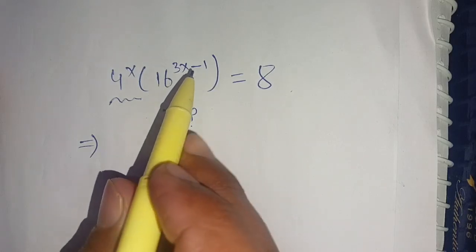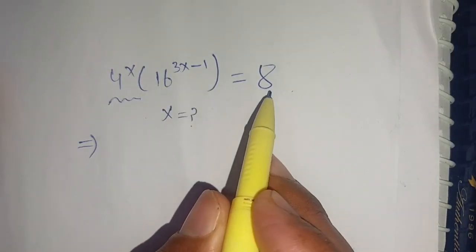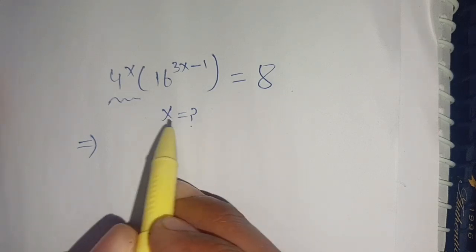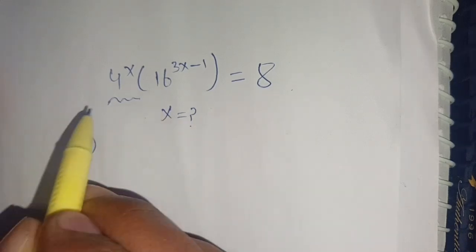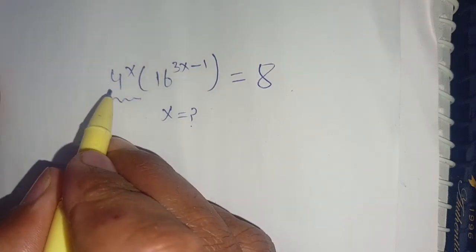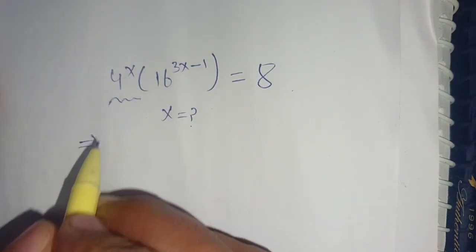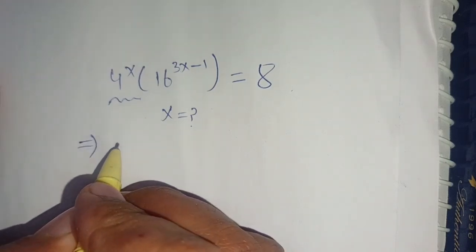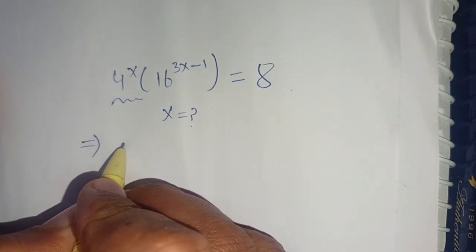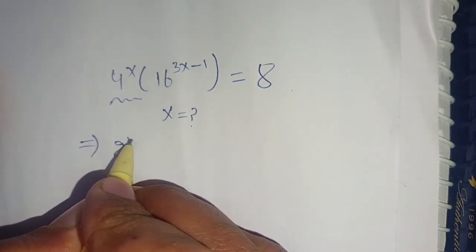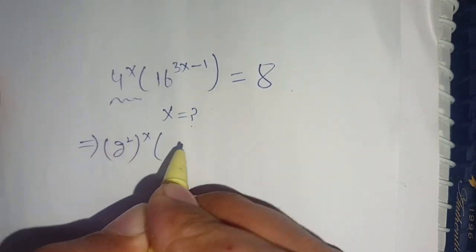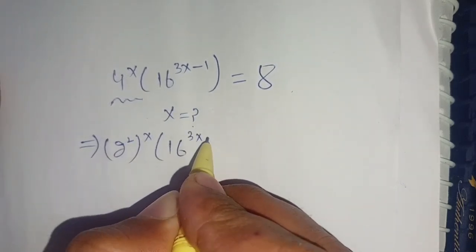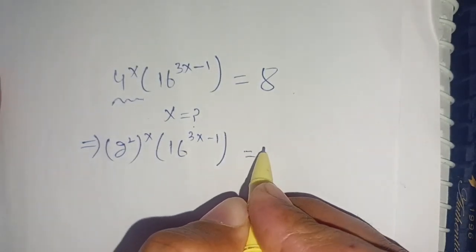Our next problem is: 4^x times 16^(3x - 1) equals 8, and we have to find the value of x which satisfies this exponential equation. First, 4^x can be written as (2²)^x, giving 2^(2x), times 16^(3x - 1) equals 8.